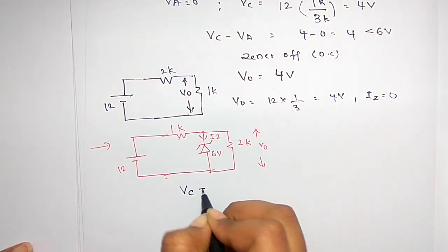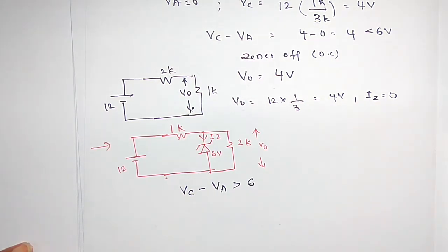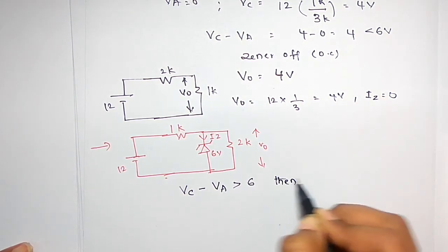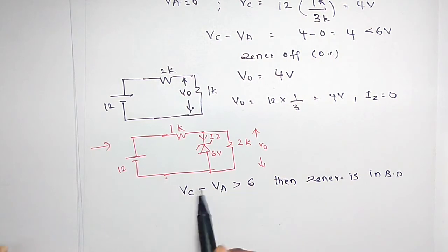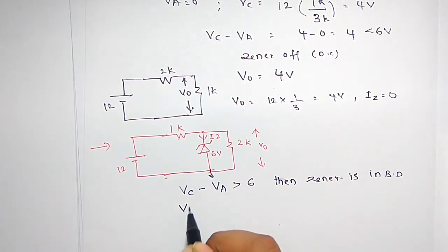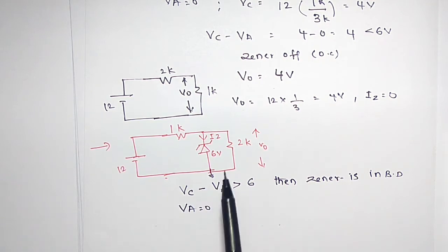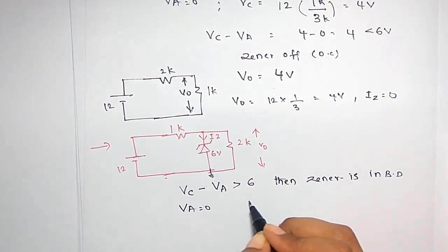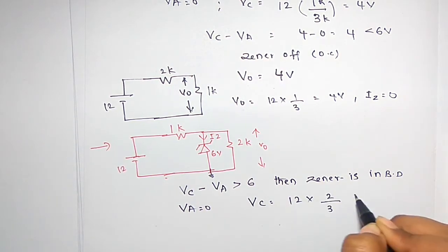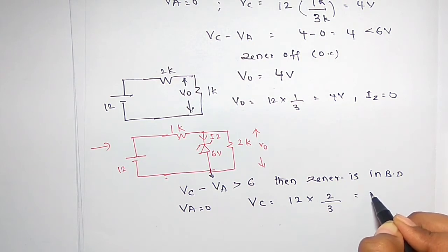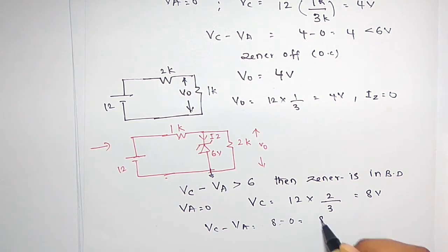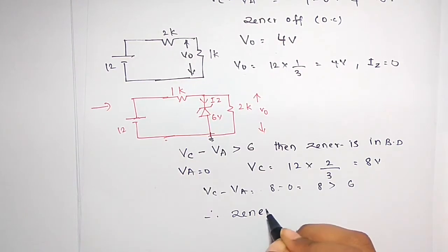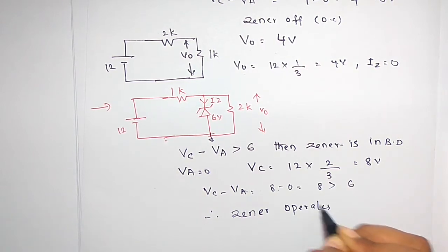Check whether cathode voltage minus anode voltage is greater than the breakdown voltage of 6 volts. Again, the anode is connected to ground so Va equals 0. Cathode voltage is the voltage across 2 kilo ohms. So Vc equals 12 into 2 by 3, which equals 8 volts. Therefore, Vc minus Va equals 8 minus 0 equals 8, which is greater than the Zener voltage. Therefore, the Zener operates in breakdown region.